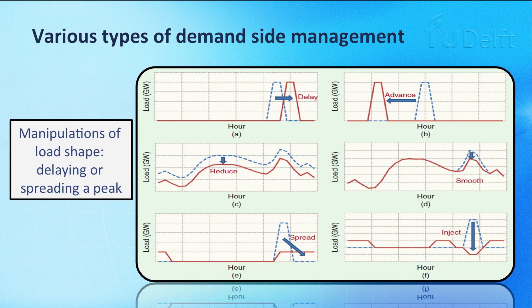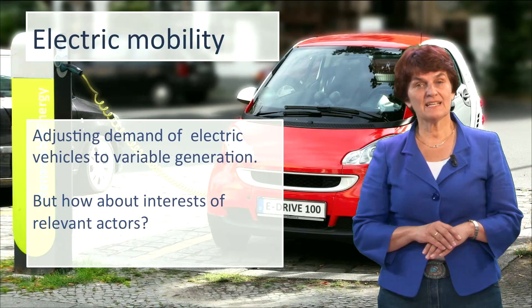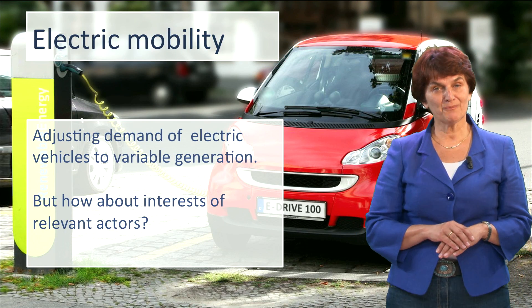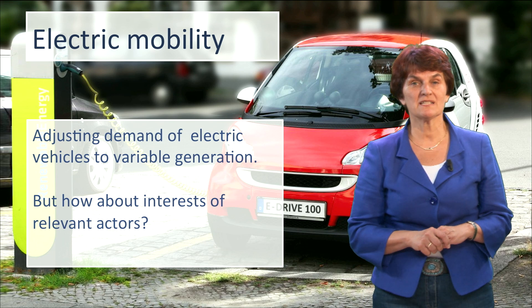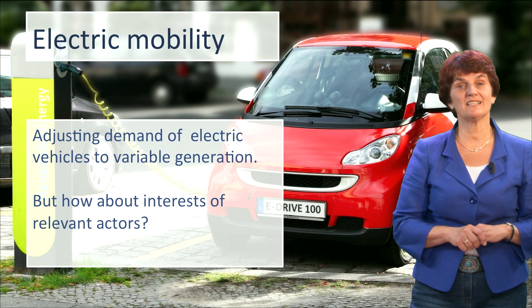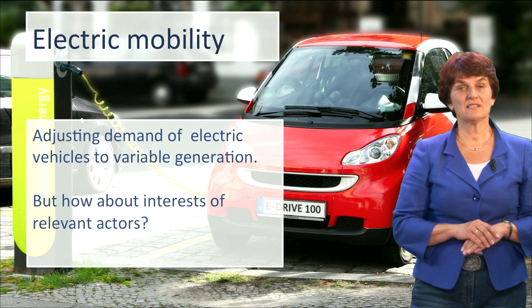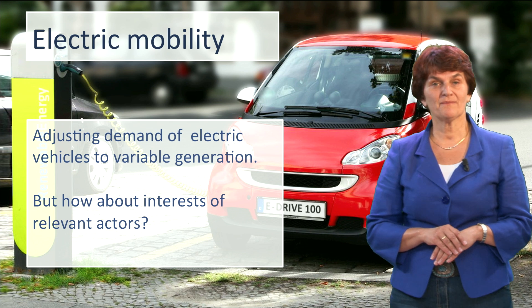There are many types of demand-side management. Manipulations of load shape can be done, for example, by delaying a peak or spreading it. Also, electric mobility has the potential to play an important role in future power systems by adjusting demand of the electric vehicles to the variable generation.